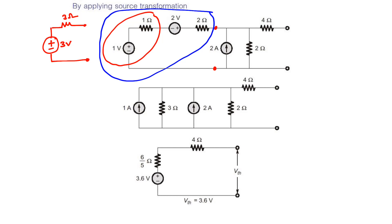These two terminals are the same as these two terminals. Now apply source transformation again for this 3 volts, 3 ohm circuit, because on the other side we have Norton equivalent current sources. Converting this 3 volts, 3 ohms into Norton equivalent — again currents get added and resistors go in parallel, so you can simplify the circuit.